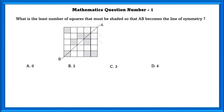This part is symmetrical. This part is symmetrical. This part will be symmetrical if we shade boxes 1 and 2, and then all parts are symmetrical. So the least number of squares that must be shaded so that AB becomes a line of symmetry is 2.